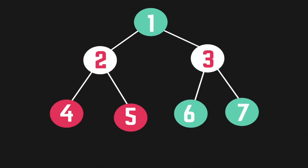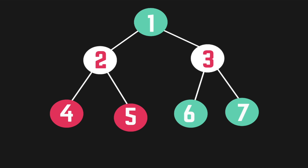In this video I want to talk about depth first search. DFS is a way we can search through a tree, so make sure you've checked out the tree data structure video. It's a very important algorithm and it's actually used as a foundation for pretty much any of the other algorithms related to trees. Depth first search and breadth first search, which we'll cover in the next video, are two approaches you can use to traverse through a tree structure.